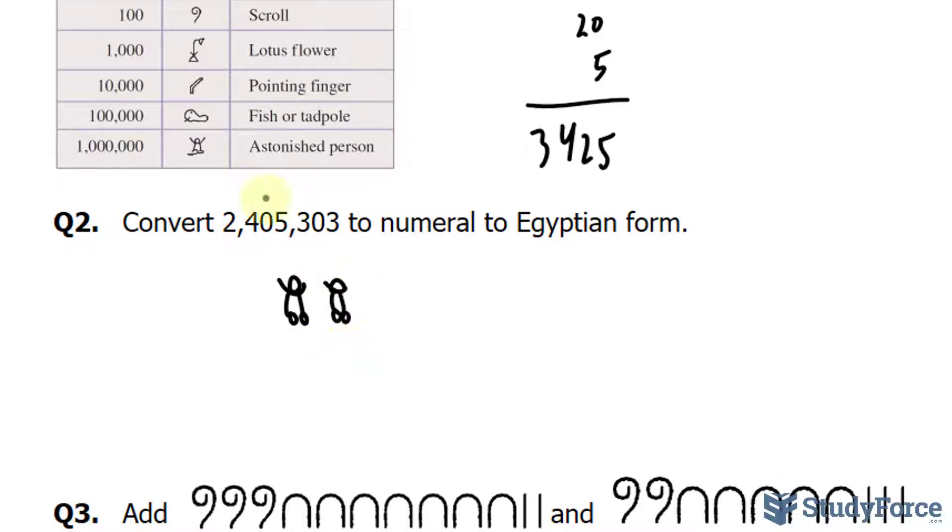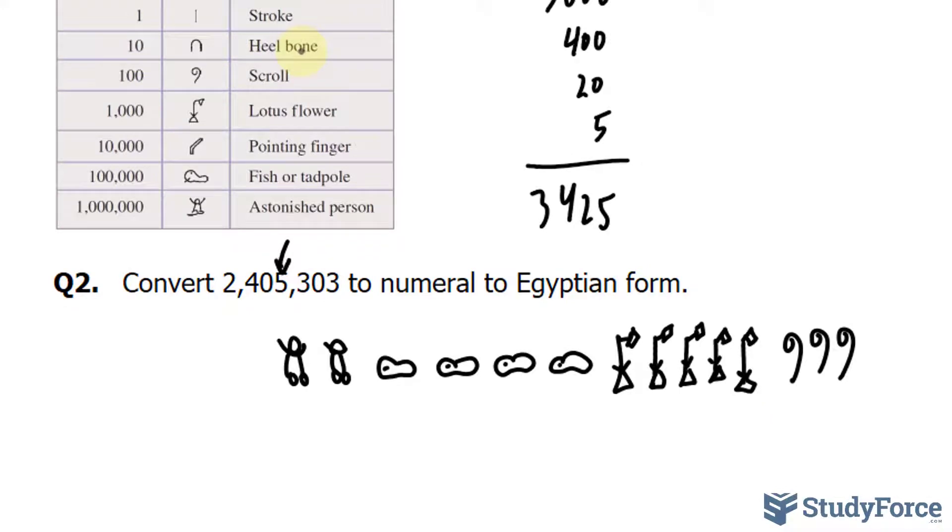We will have four 100,000 symbols, which is that fish. The 5,000 is represented using the lotus flower, we'll need five of those. We need three scrolls to represent 300, no heel bones and three strokes.